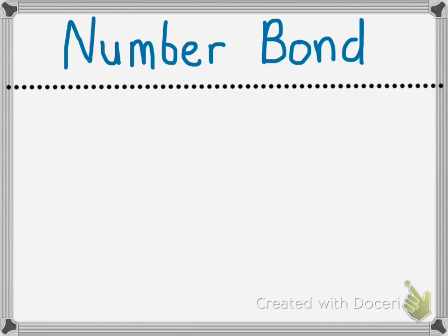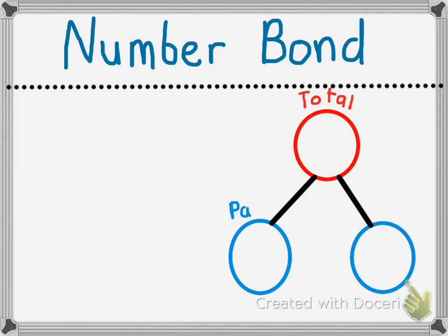Now let's take a look at what this means as far as a number bond goes. We're going to turn my family into a number bond. Remember, this is a number bond. In the number bond, we have our parts. You can see the parts at the bottom and the total on the top. The two parts are added together to make a total.